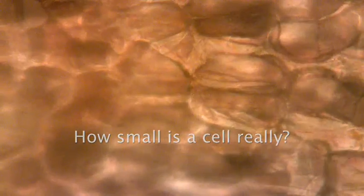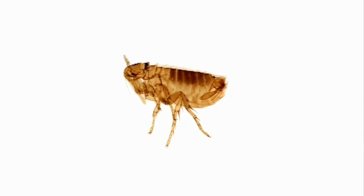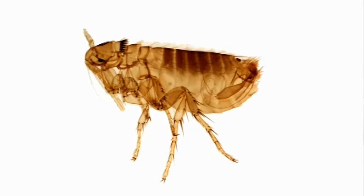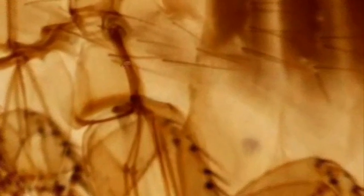But how can you imagine how small a cell actually is? Well, the flea is one of the smallest organisms that you can see with the naked eye. And if you were to imagine that a flea had its own flea, that would be the size of a cell.